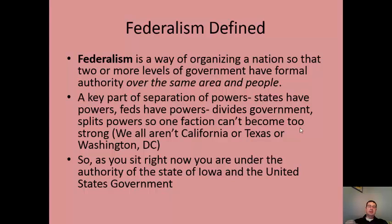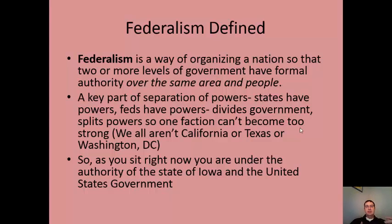Massachusetts tried a universal health care system that became a model for Obamacare. States and the federal government have different powers, and when things can't be done at the federal level because the parties are closely divided, other parts of government pass policies — but obviously they're limited to their own jurisdiction.